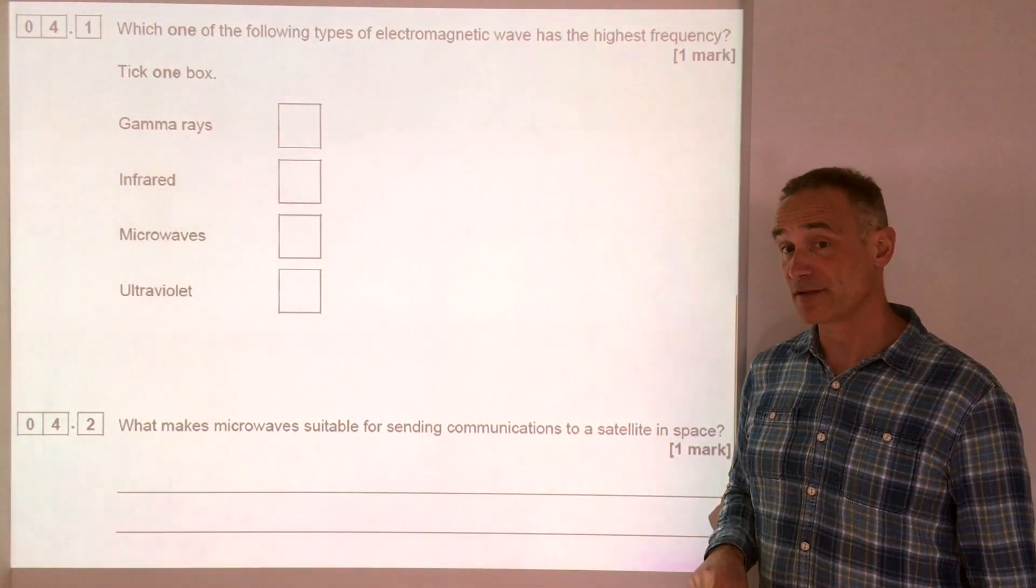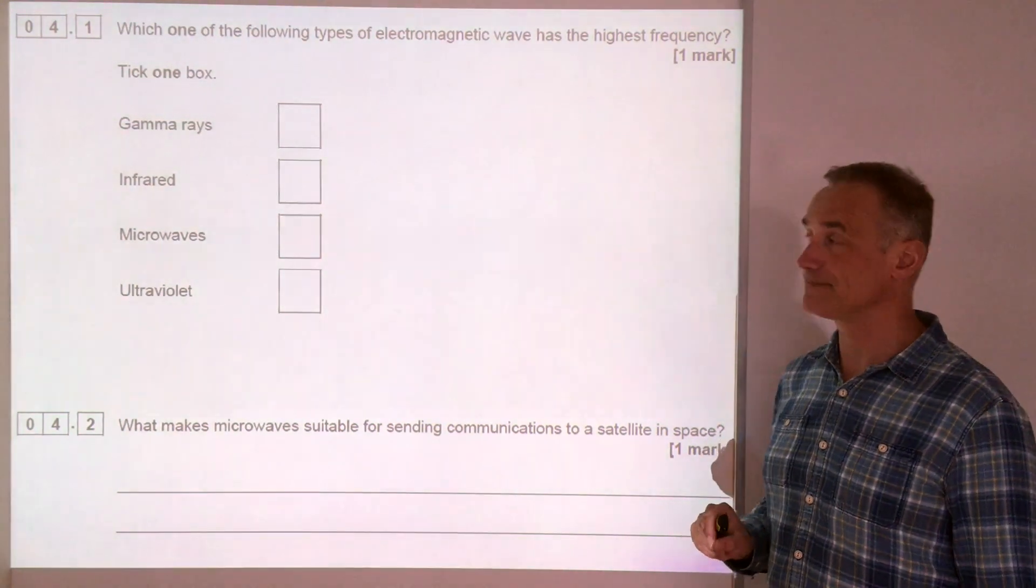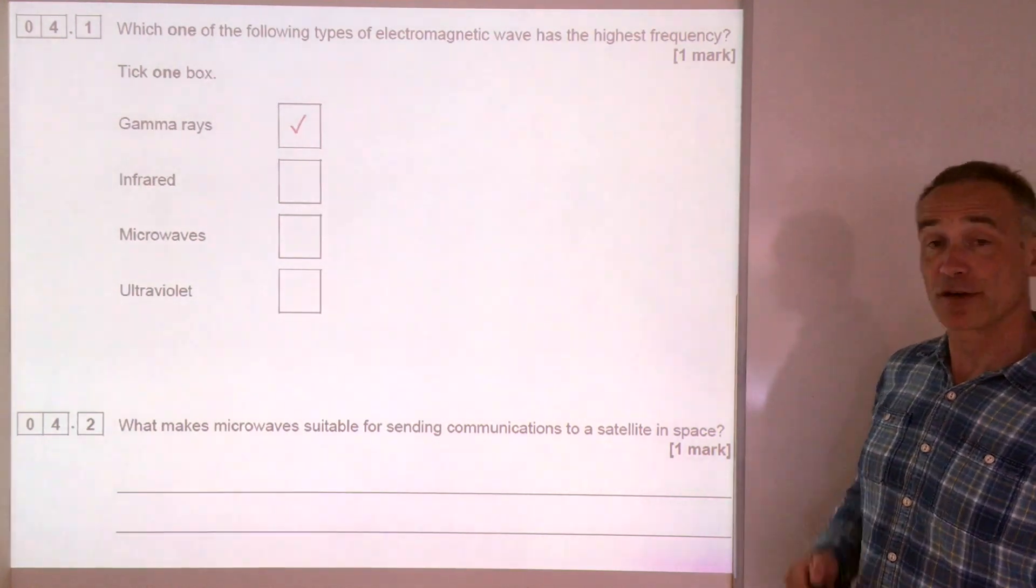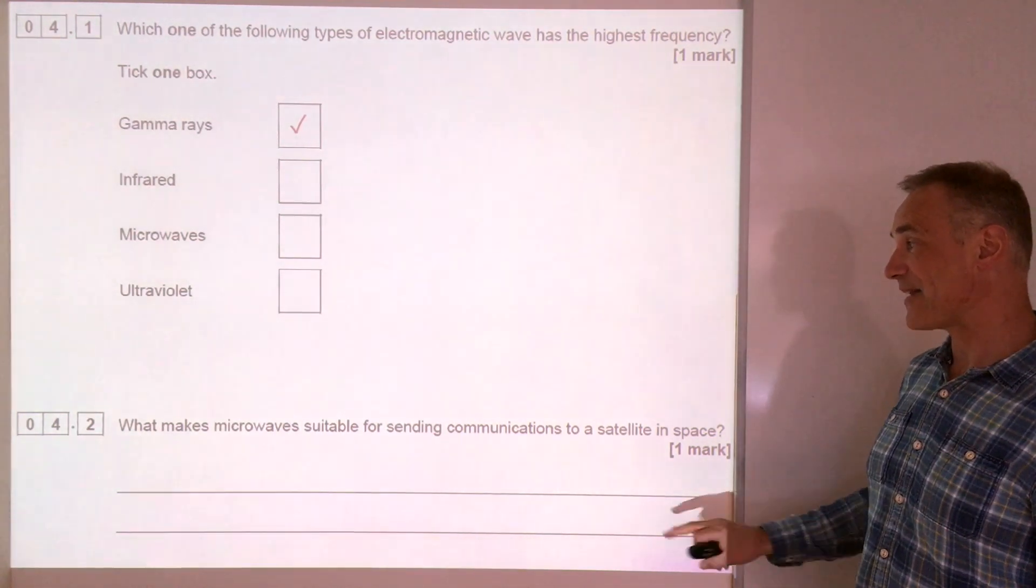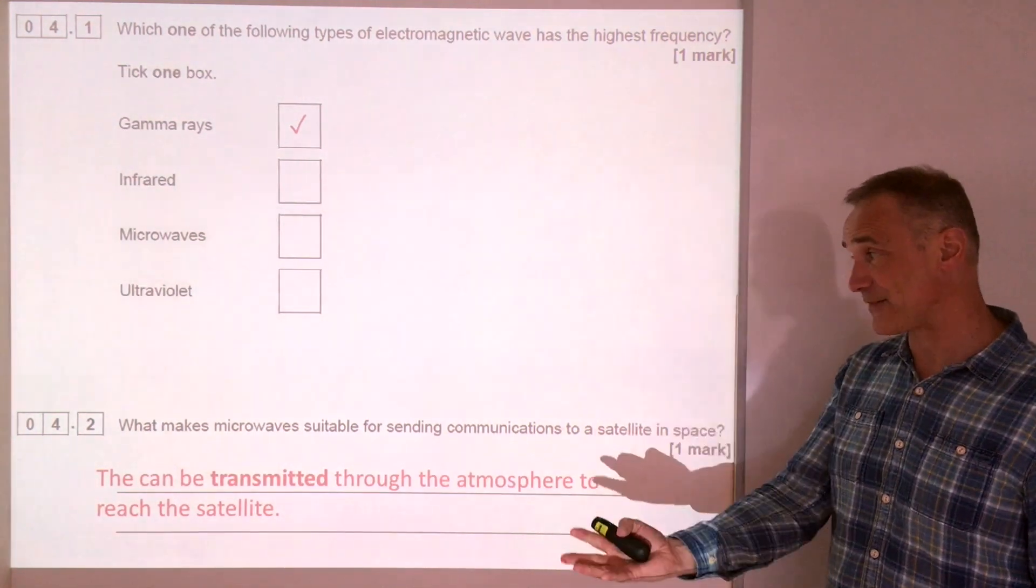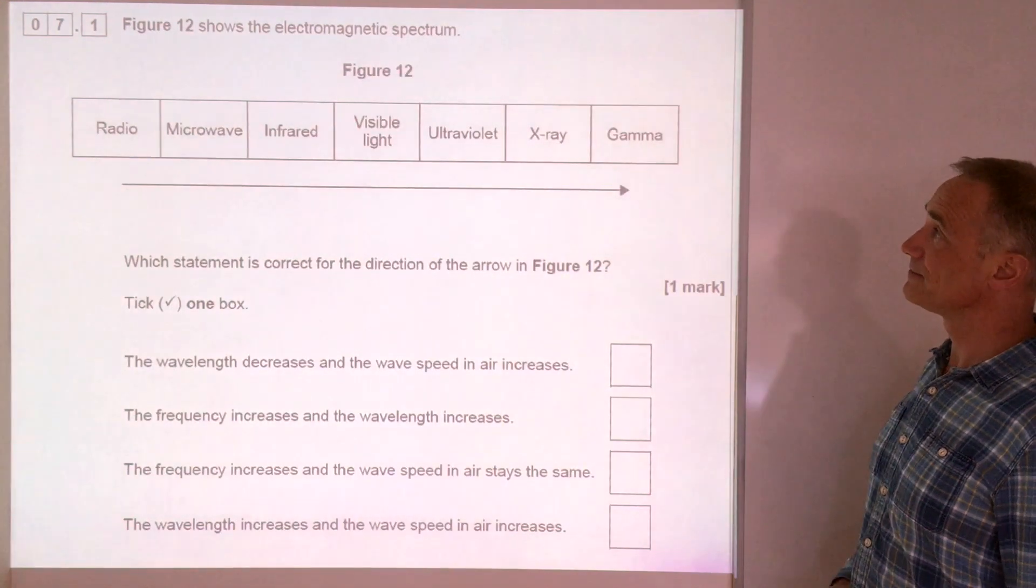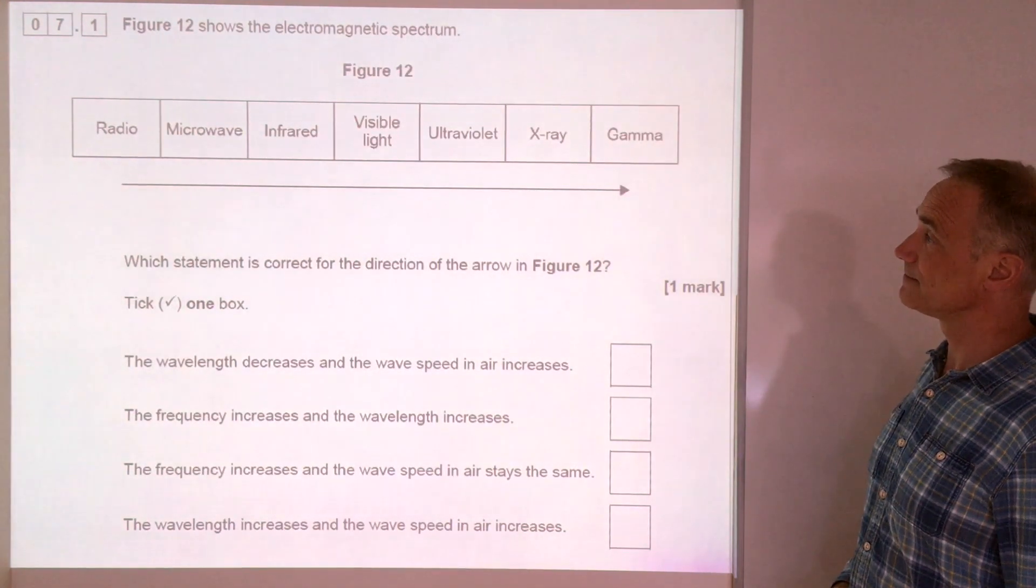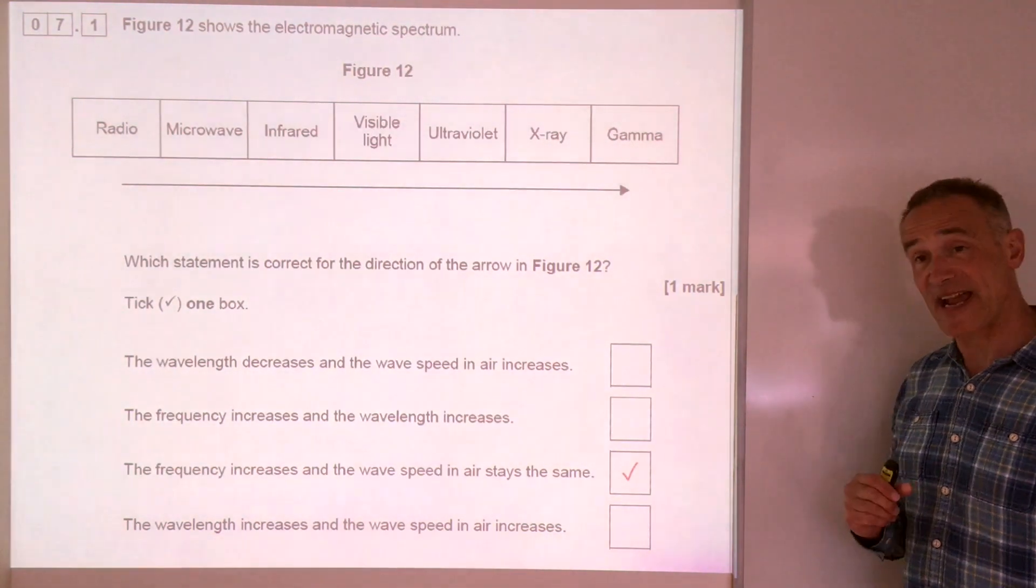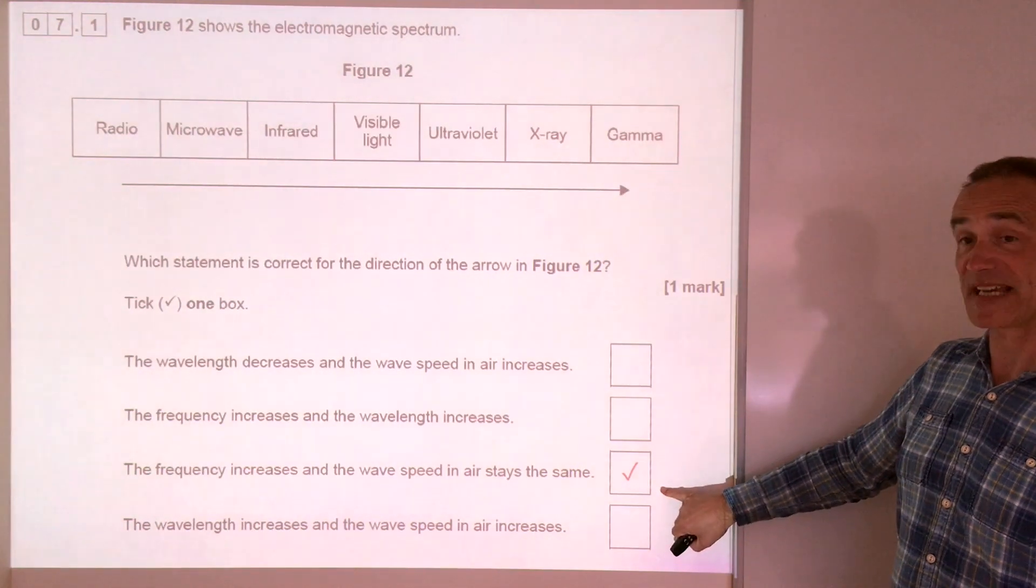Have a quick go at some of these questions. Pause each question and then I'll go through it in a minute. I hope you've got gamma rays for the first bit. And the second bit, of course, microwaves are transmitted through the atmosphere to reach a satellite. The only one that's correct is the frequency increases and the wave speed stays the same.